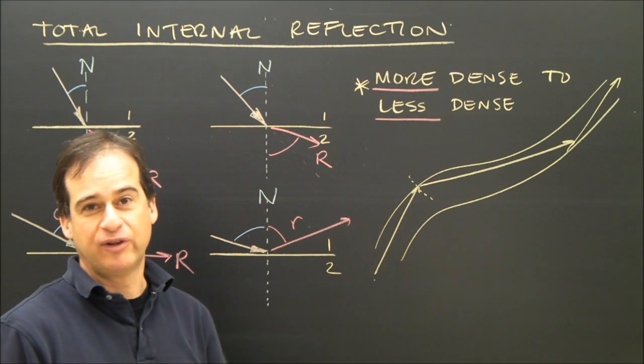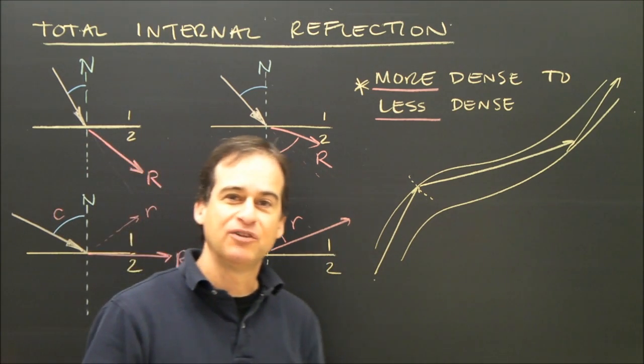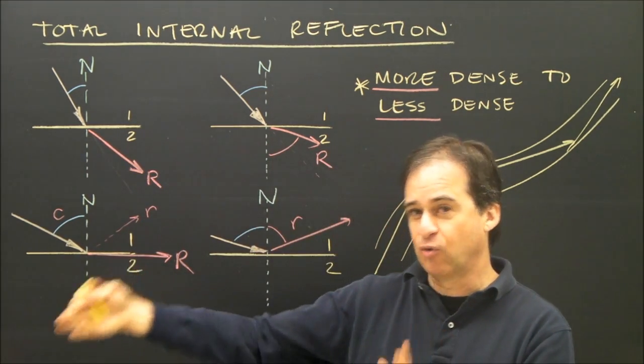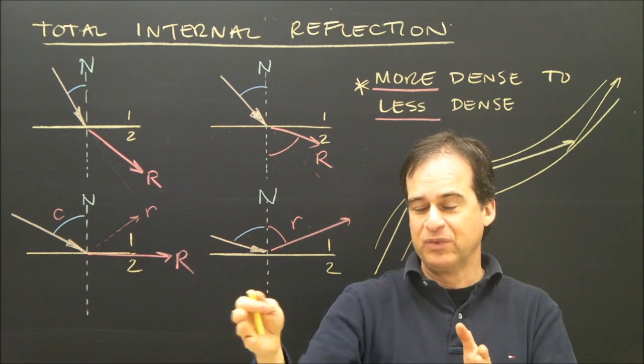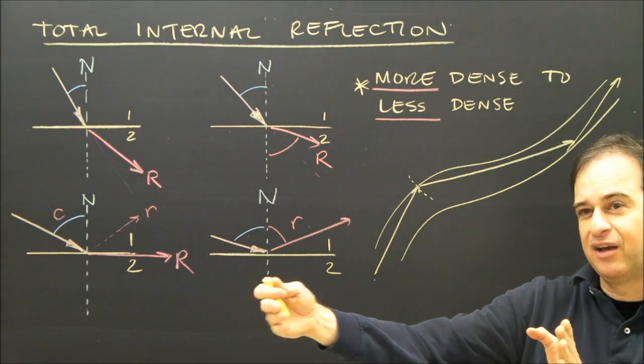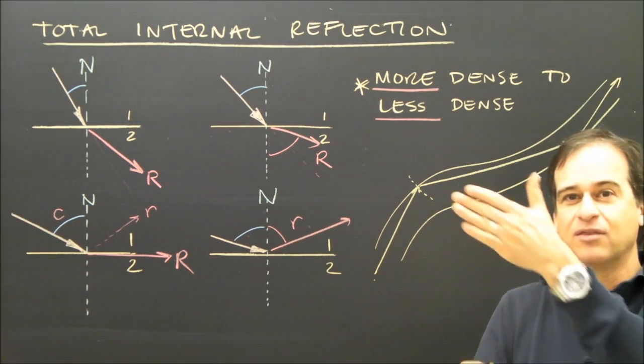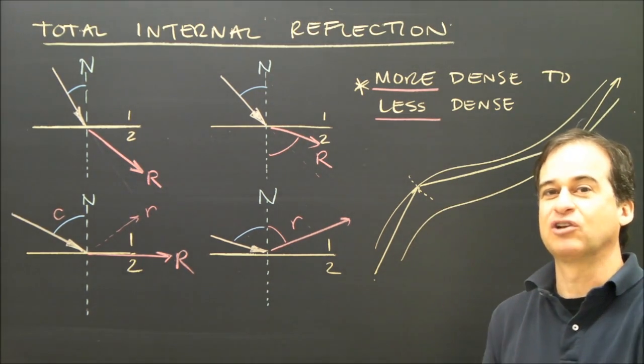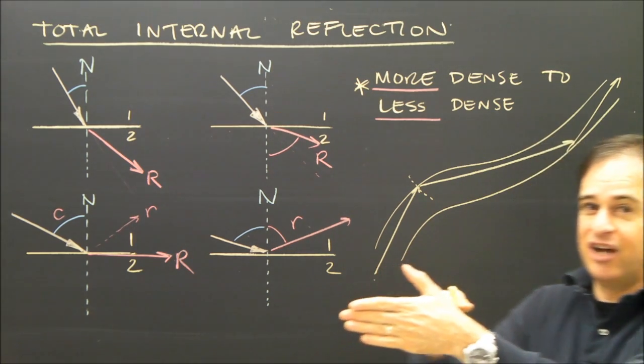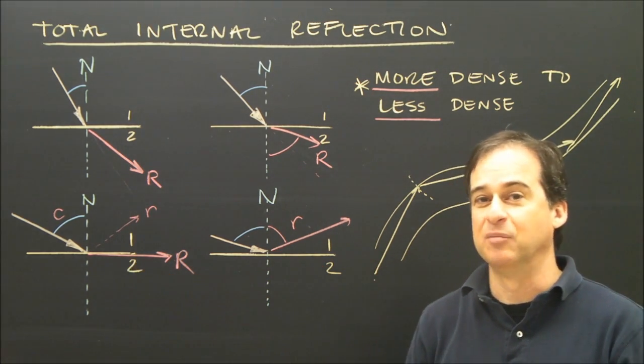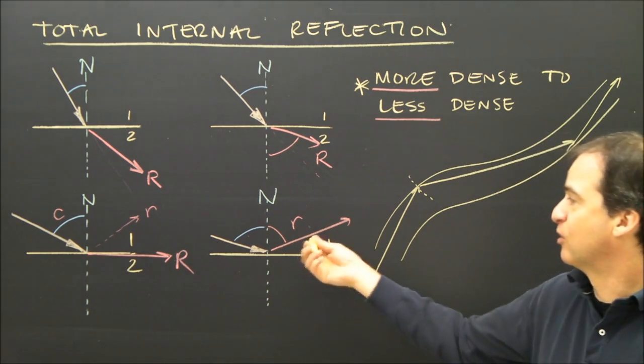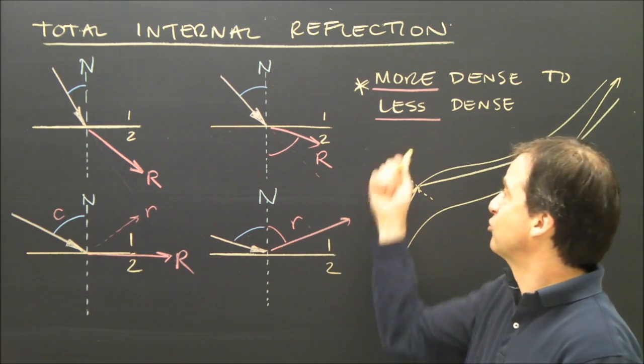So total internal reflection is useful. You might even notice it at home when you have an aquarium. If you look through the aquarium, you can see out the back of the aquarium. But if you look at a very steep angle, you look inside your aquarium, the back of the aquarium starts to look like a mirror. So if you look through the side of the aquarium, trying to look at the back of the aquarium, it might act like a mirror. That's when you pass that critical angle and you get total internal reflection.